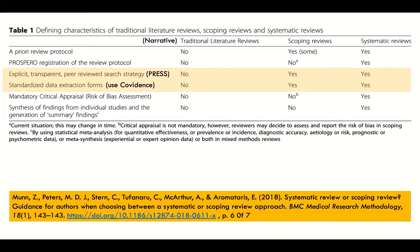Both scoping and systematic reviews require standardized data extraction — that's covered in Thursday's session. Critical appraisal and risk of bias assessments are generally not required for scoping reviews, but are absolutely required for systematic reviews, particularly in the health sciences. Synthesis of statistically-driven summary findings is also required for systematic reviews but not scoping reviews.